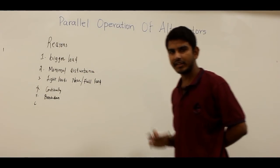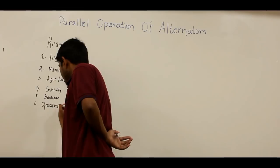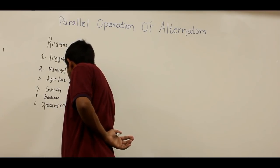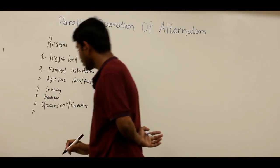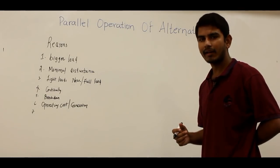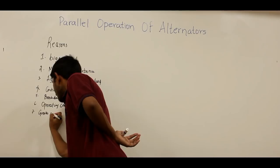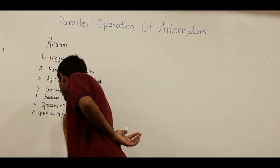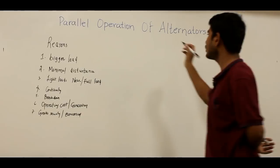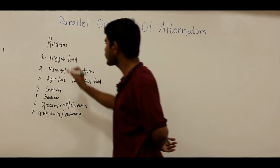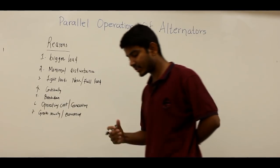The sixth reason is that parallel operation of alternators reduces the operating cost as well as generating cost. The seventh reason is that operation of alternators in parallel ensures greater security of supply as well as overall economical generation. Because of these several reasons, we go for the parallel operation of alternators.